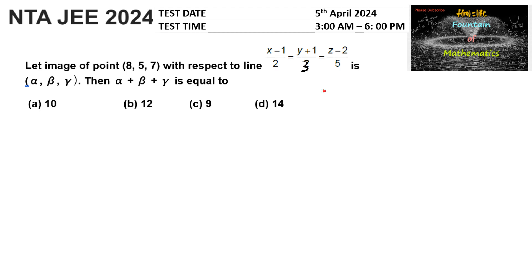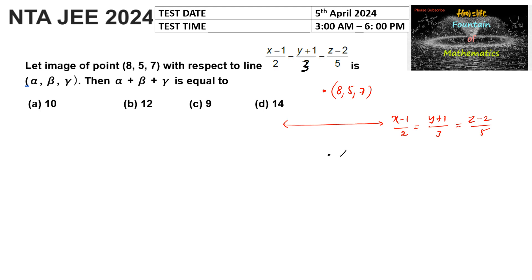Let the image of point (8, 5, 7) with respect to the line x−1/2 = y−1/3 = z−2/5 be given as (alpha, beta, gamma). Then find the sum alpha plus beta plus gamma.